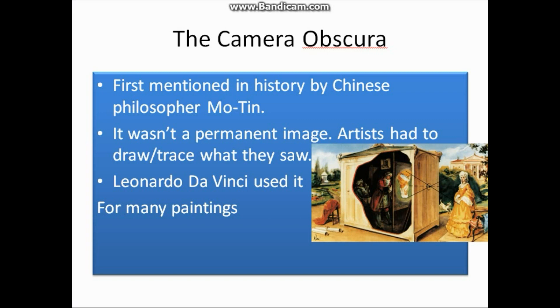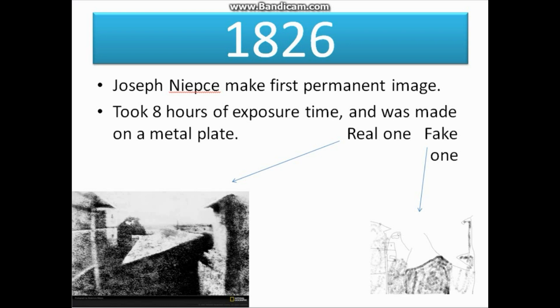The Camera Obscura, first mentioned in history by Chinese philosopher Mo Tin. It wasn't a permanent image. Artists had to draw or trace what they saw. Leonardo da Vinci used it for many of his paintings.